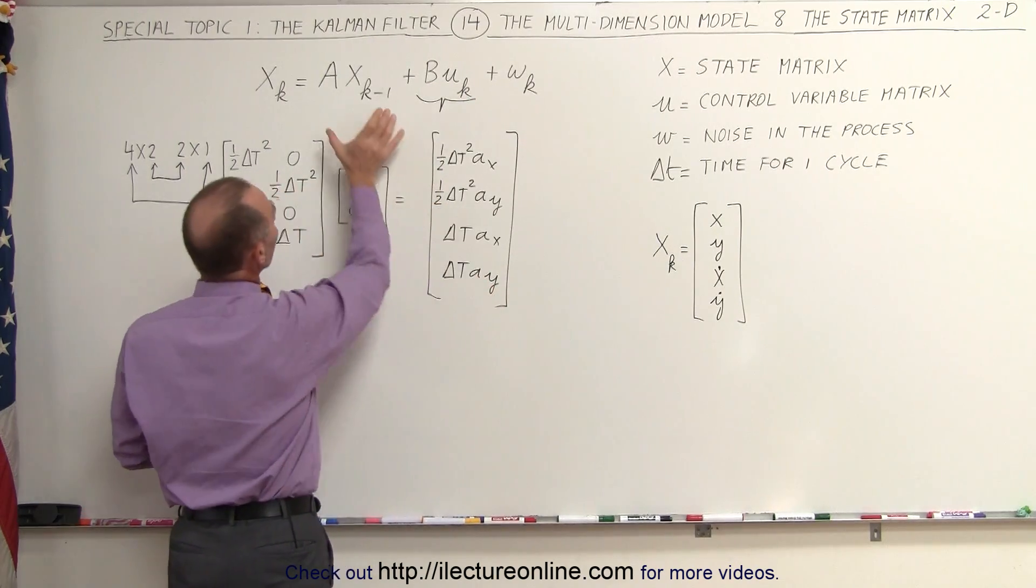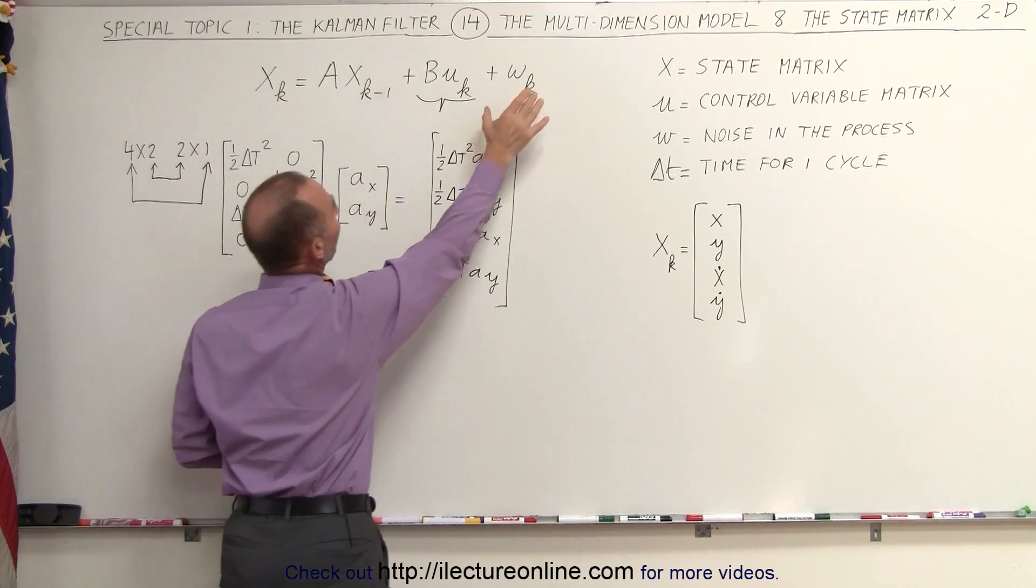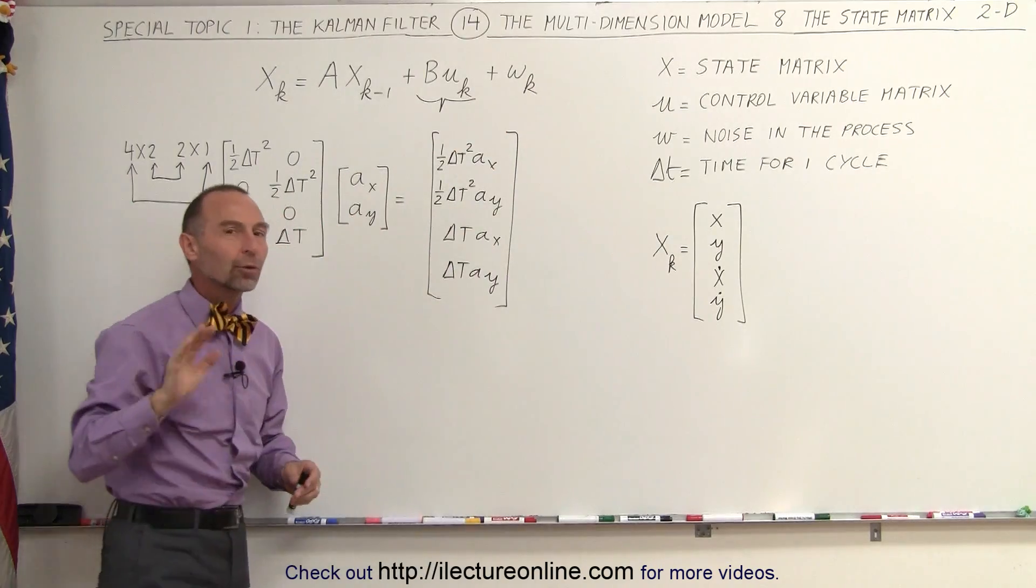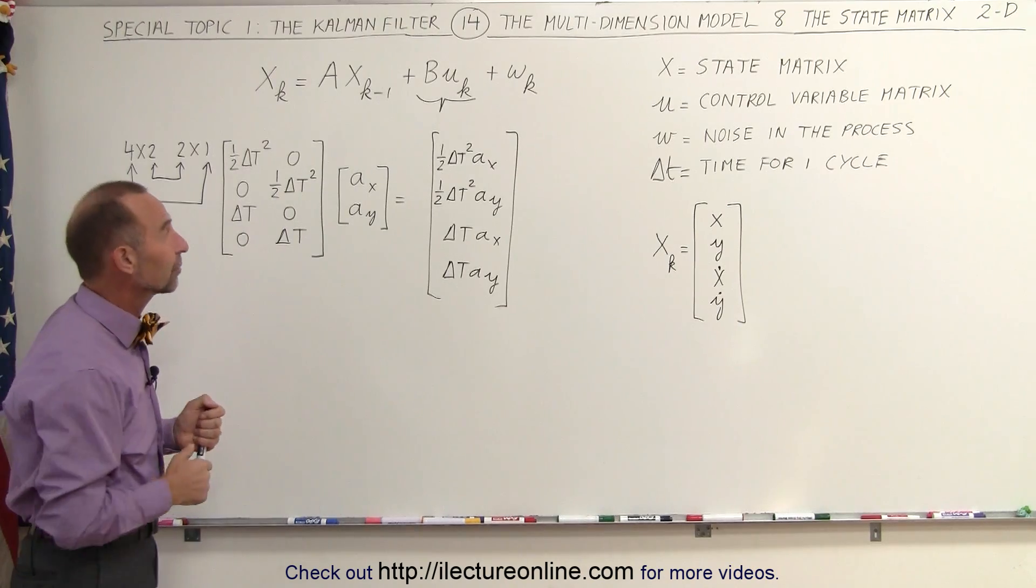We then add that to the multiplication we have here, A times x sub k minus 1. If we have noise, we have to add that as well. We're not going to go there yet. We'll show you at the end how to also take care of the noise factor.